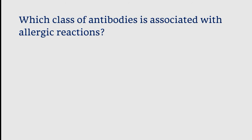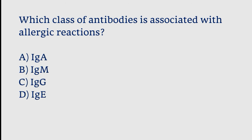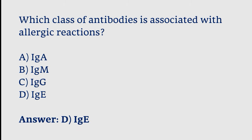Which class of antibodies is associated with allergic reactions? Options: IgA, IgM, IgG, IgE. The correct answer is option D. IgE class of antibodies is associated with allergic reactions.